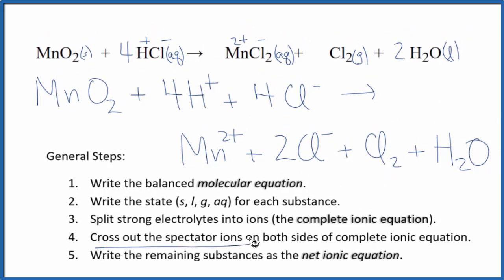Now we can cross out the spectator ions. They're on both sides of the complete ionic equation. Looking at this equation, we have 4 chlorines here and 2 here. So what I'm going to do is cross these 2 out and cross out 2 of these, which will just leave me with 2 chloride ions here. And that's all I can cross out.